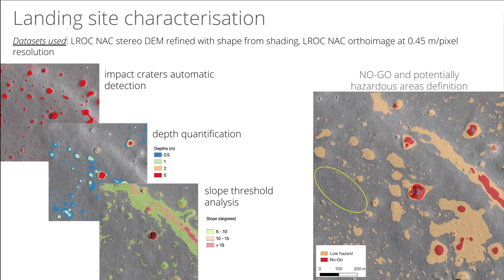We used a digital terrain model derived from stereo observation of the high-resolution camera on board the Lunar Reconnaissance Orbiter. By combining the stereo images with the illumination conditions, we were able to create a highly detailed terrain from which we automatically extracted the location of all possible navigation obstacles such as impact craters and depressions, and calculated their depths. Slope thresholds for trafficability have been defined in a conservative fashion, taking as reference the slope navigation threshold of the Mars rovers. We were therefore able to define a hazard map with no-go areas and potential hazardous regions, as well as define a landing ellipse of 150 by 250 meters in the safest area closest to the pit.